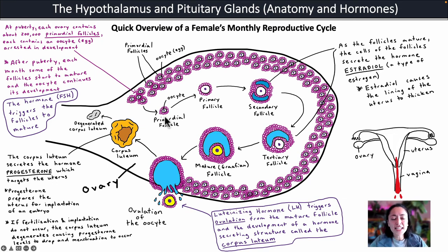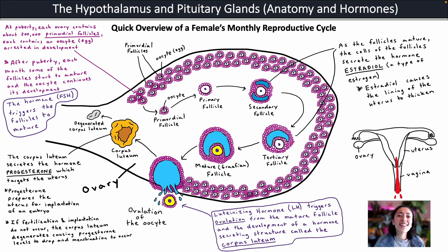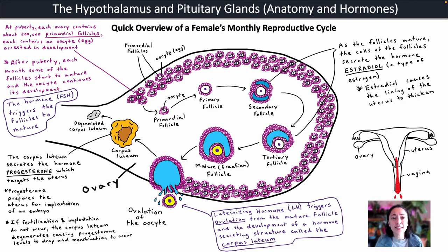Quick overview: inside a female's ovary she has many primordial follicles. FSH triggers those follicles to mature, and as they mature they secrete estradiol, which affects the uterus. Only one follicle becomes a mature Graafian follicle, and luteinizing hormone triggers that mature follicle to ovulate. If a female takes an ovulation test, it measures luteinizing hormone levels — when LH peaks, ovulation will happen very soon. After ovulation, the remaining follicle cells become the corpus luteum and secrete progesterone to help sustain pregnancy; if pregnancy does not occur, progesterone levels drop and menstruation occurs.